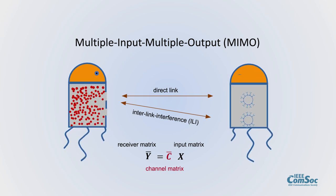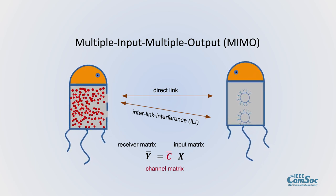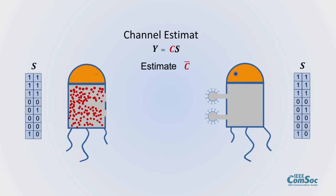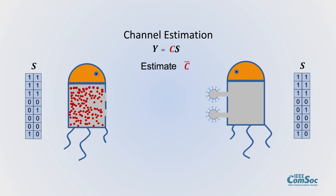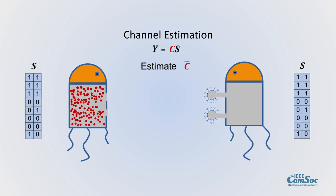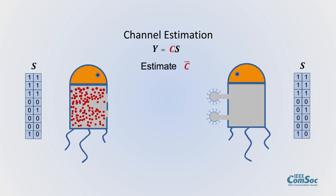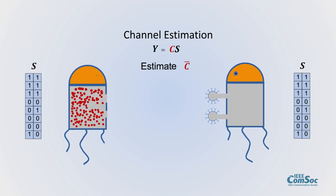The transmitter nanomachine sends an optimally designed training sequence over the channel. The receiver on the other side counts the number of molecules and saves them in matrix Y.